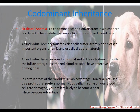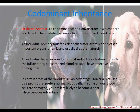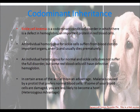Codominant inheritance — sickle cell anemia is a codominant disorder in which there is defective hemoglobin, an important protein in red blood cells. An individual homozygous for sickle cell suffers from blood clots, anemia, and usually dies prematurely. An individual heterozygous for normal and sickle cells does not suffer the full disorder, but some red blood cells still have defective hemoglobin. In certain areas of the world this is an advantage — malaria is caused by a protist that prefers normal blood cells. If some of your blood cells are defective, you are less likely to become a host. This is called heterozygous advantage.